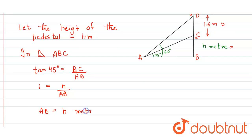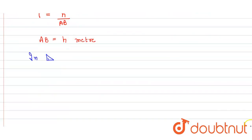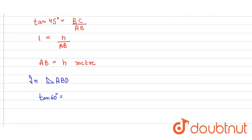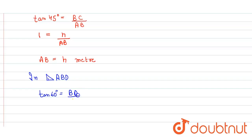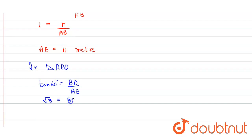Now we apply the trigonometric ratio in the bigger right angle triangle ABD. In triangle ABD, tan 60 degrees equals perpendicular BD upon base AB. Tan 60 degrees is root 3, and BD equals BC plus CD, where CD equals 1.6 meters, divided by AB which we found to be h.